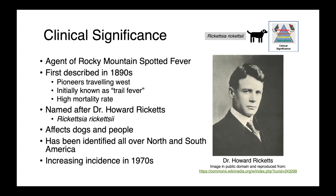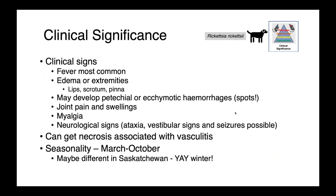Rickettsia rickettsii affects both dogs and people, and has been identified all over North and South America with increasing incidence since the 1970s. Clinical signs in dogs include fever as the most common sign. We can also see edema of the extremities — on the lips, scrotum, or pinna — and these animals may develop petechial or ecchymotic hemorrhaging: the spots associated with the organism. We can also see joint pain and swelling, myalgia, and neurological signs likely associated with vascular lesions in the brain.